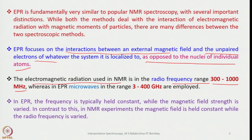In EPR, microwaves are used in the range of 300 to 400 gigahertz. The frequency is typically held constant — this is a major difference between NMR and EPR — while the magnetic field strength is varied.